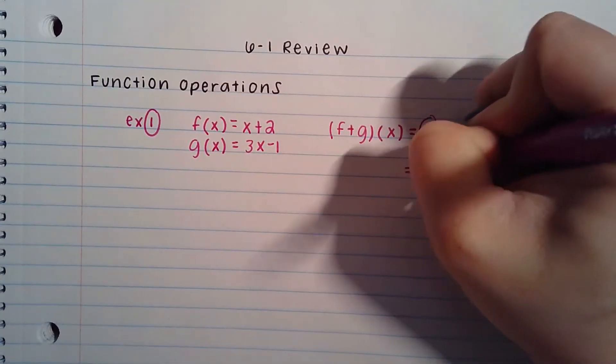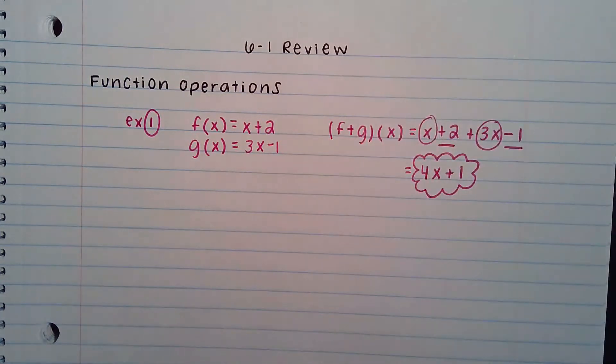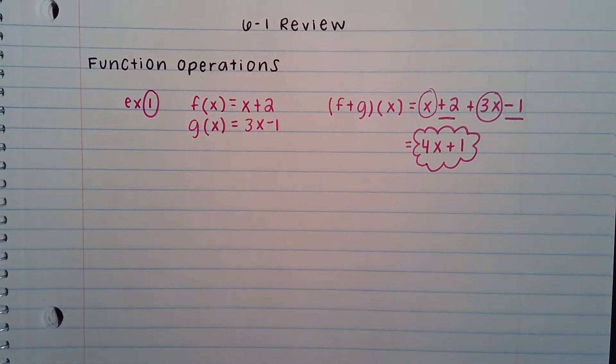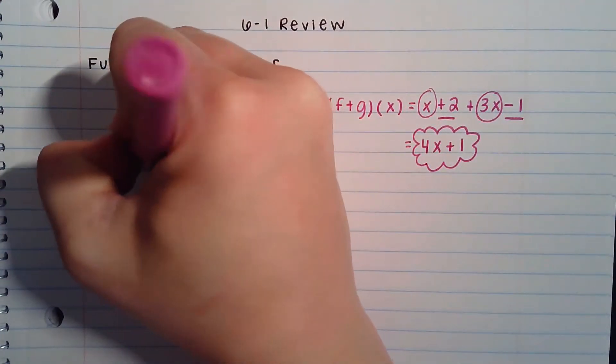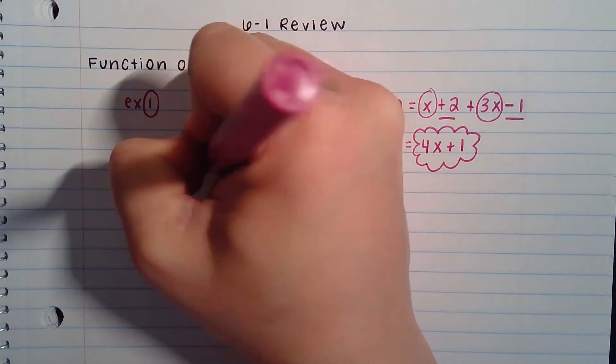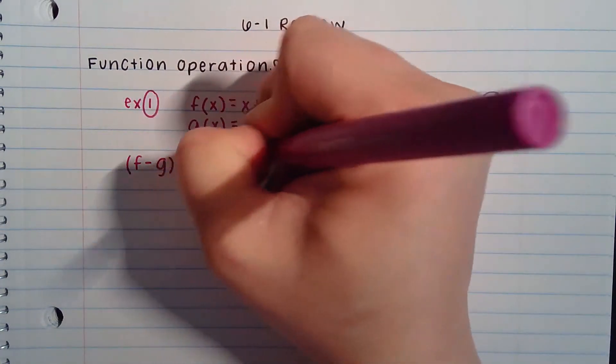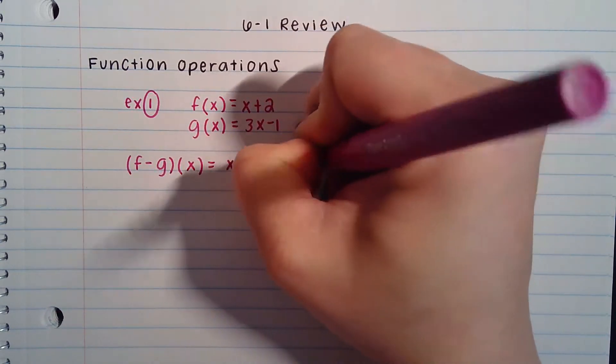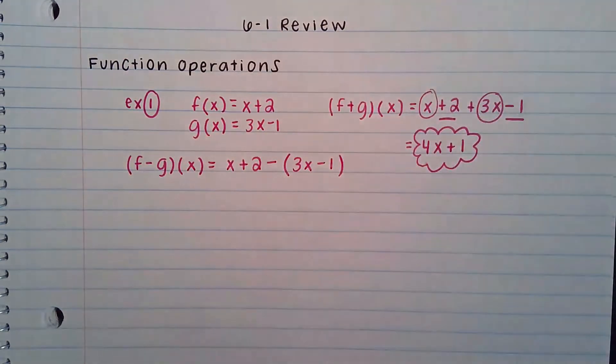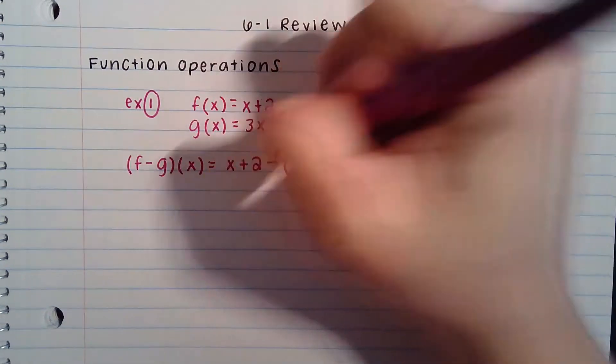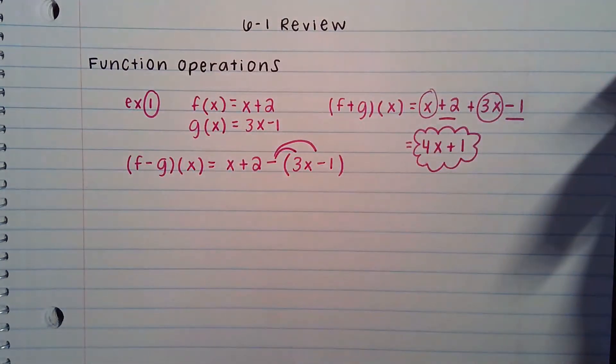And now let's go to subtraction. When you're subtracting, you're doing f minus the entire g equation. Because of that, it's really important that you put your second equation in parentheses. Because you're not subtracting just one part of it, you're subtracting the whole thing. What putting in parentheses reminds you to do is to distribute the negative to every single term that's inside the parentheses.